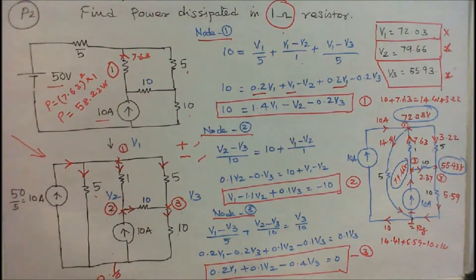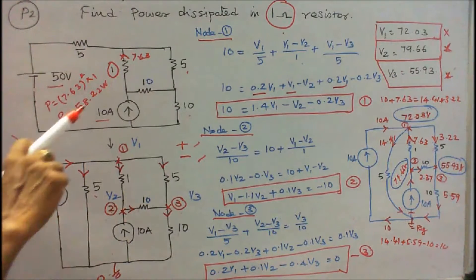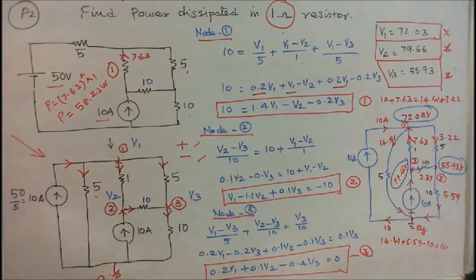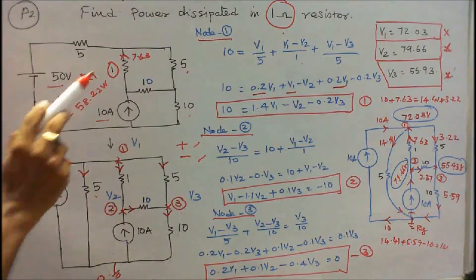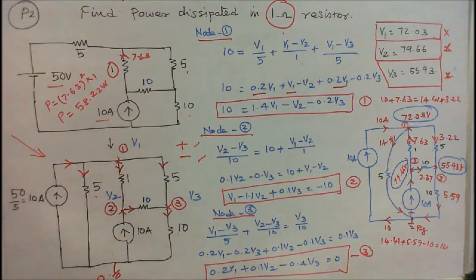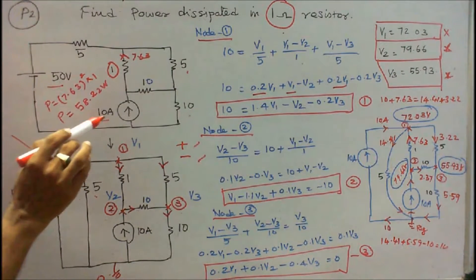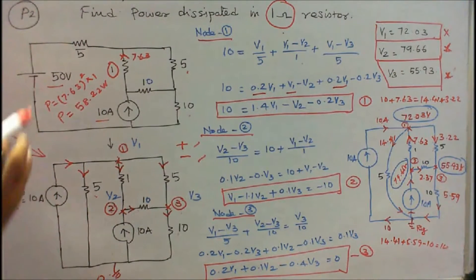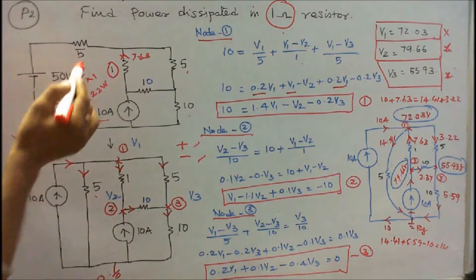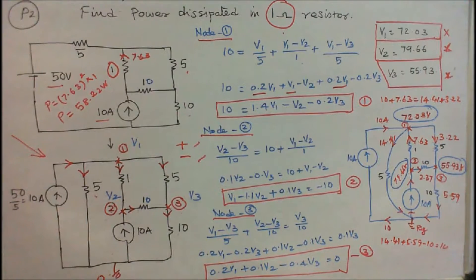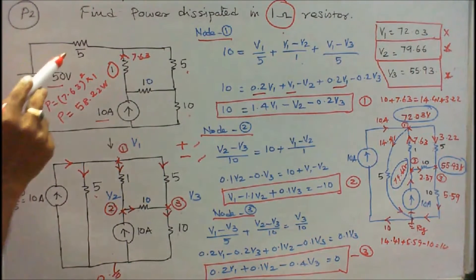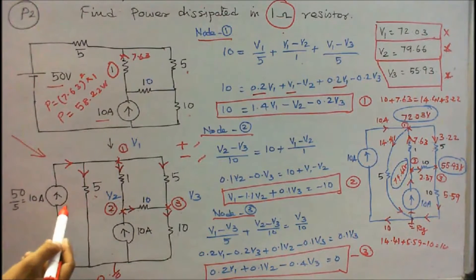Problem number 2: five resistors, one 50 volt source, and one 10 amp current source are connected as shown in the figure. The question is: find power dissipated in the 1 ohm resistor. I convert the 50 volt and 5 ohm into an equivalent current source: 50 by 5 equals 10 amps, with the 5 ohm resistor connected in parallel.